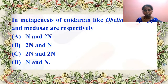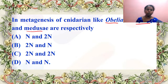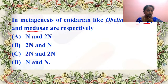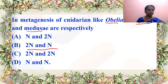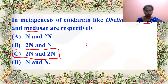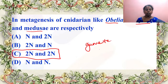In metagenesis, cnidarians like Obelia have polyp and medusa stages. What is the ploidy of Obelia? Answer is C — it is 2N, 2N. Only gametes are haploid (n). Obelia in either polyp or medusa form will be in the 2N condition only.